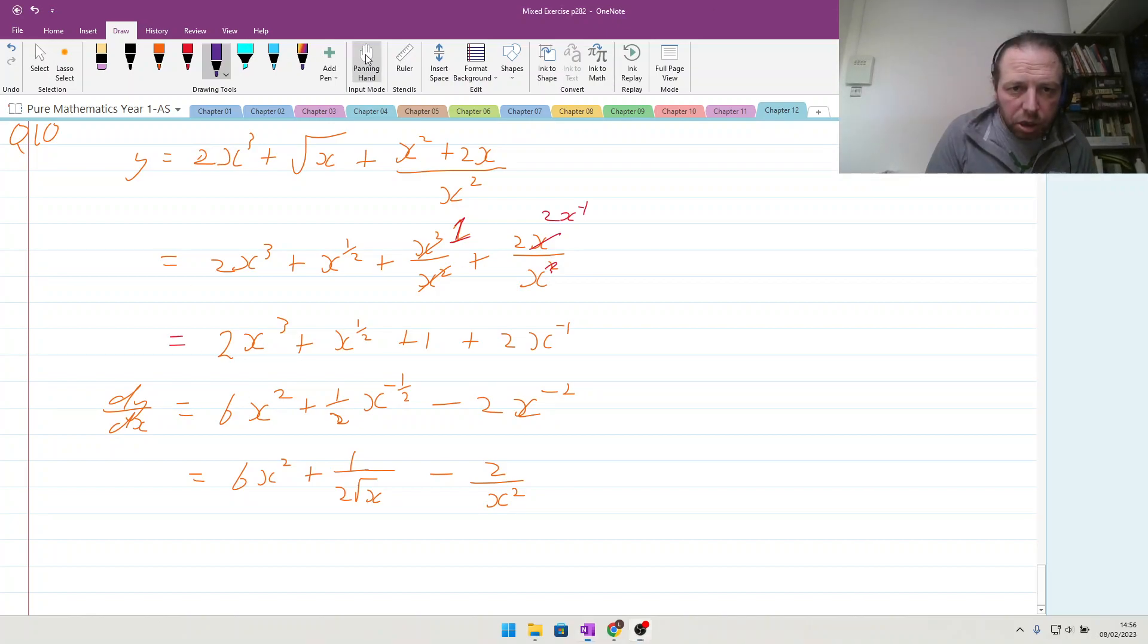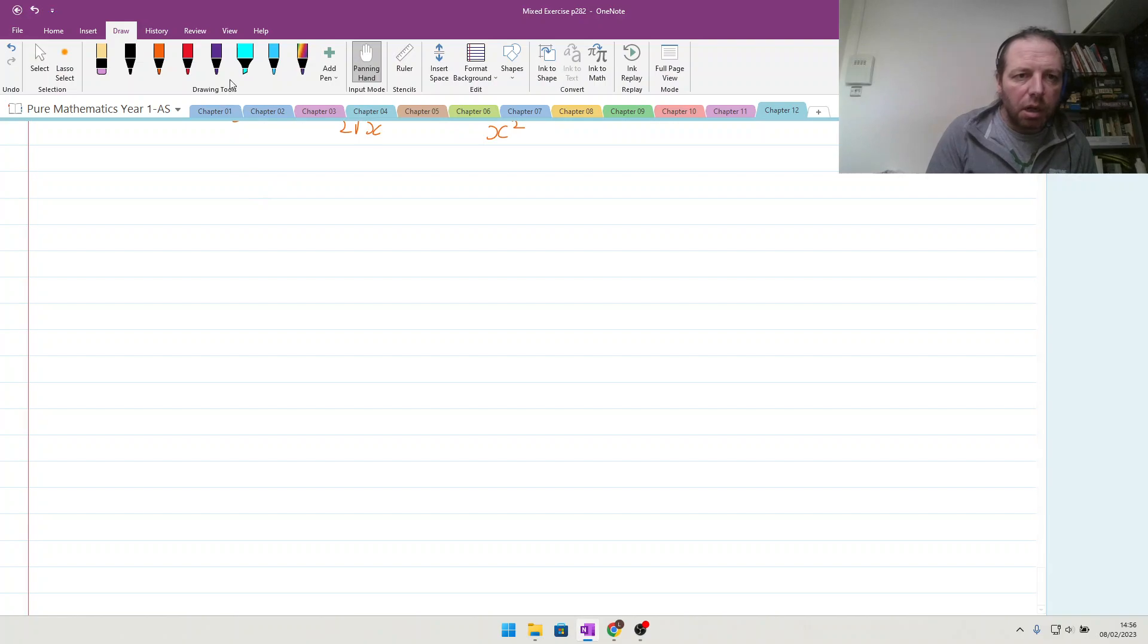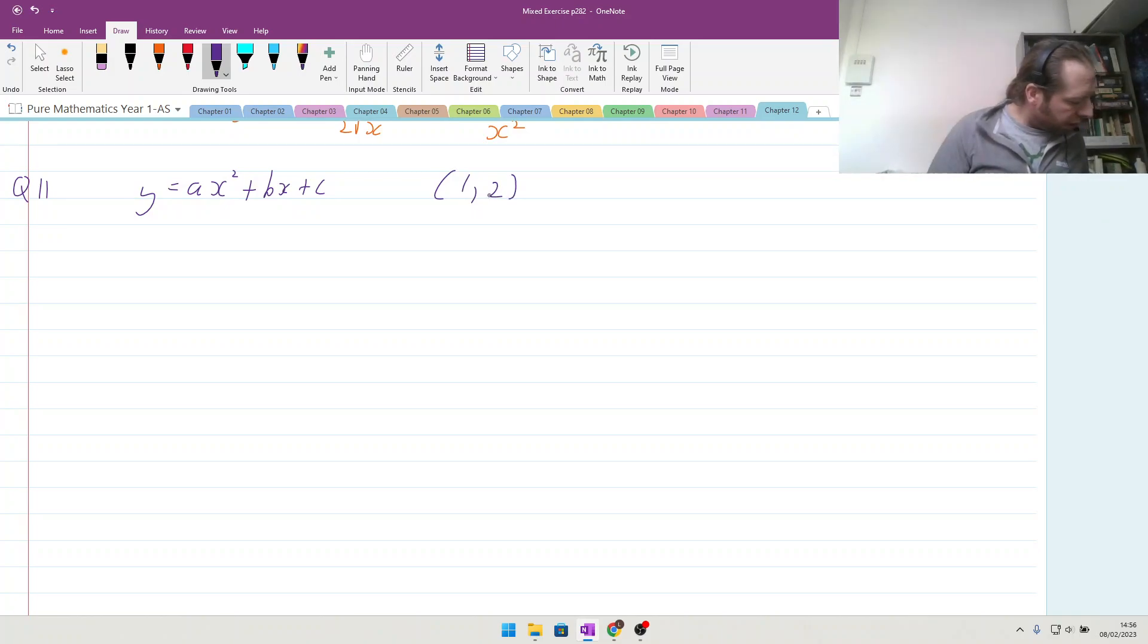Okay, then, so question 11. Curve with the equation y equals ax squared plus bx plus c passes through a point of (1, 2). The gradient of the curve is 0 at (2, 1). Find the values of a, b, and c.